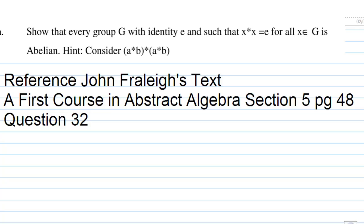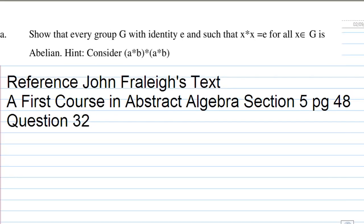Now this is actually a question found in John Fraleigh's text First Course in Abstract Algebra section 5 page 48 question 32. So we are given that x times x equals e for all x in G. We are going to show that our aim is to show that ab equals ba when we multiply them. This is what they mean by a group is abelian means commutative.